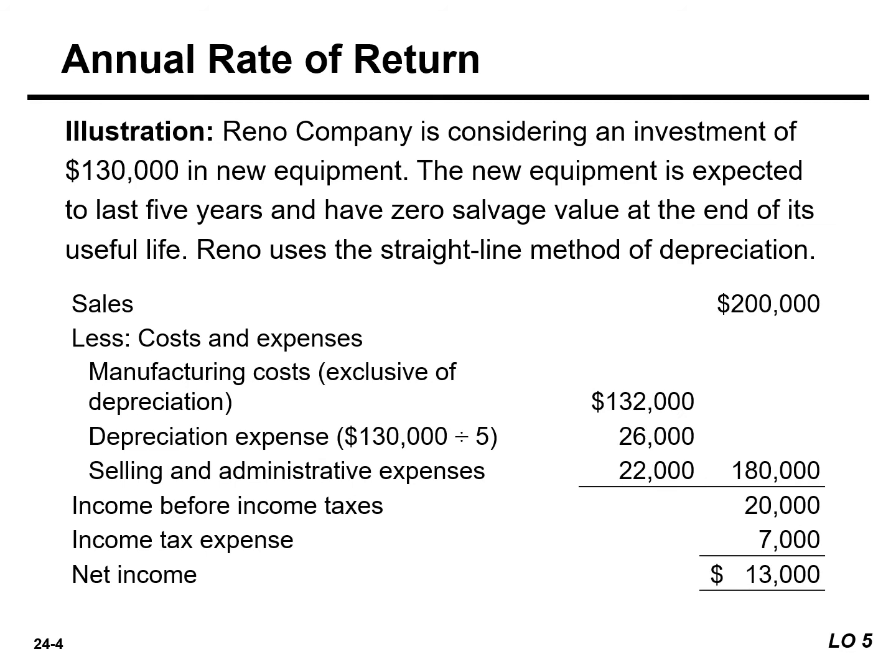If the company invests in this new equipment, they expect the following annual revenues and costs. The expected annual net income is $13,000.